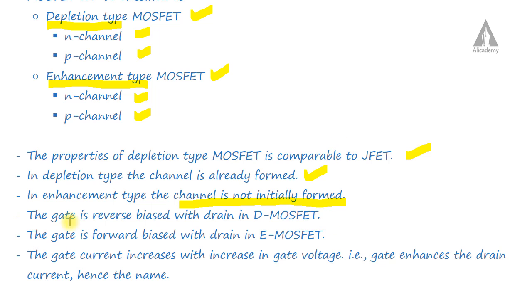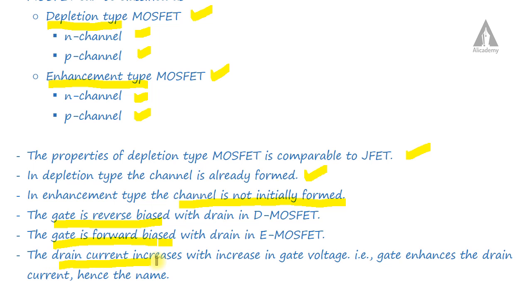In the depletion type MOSFET, the gate is reverse biased, but in the enhancement type MOSFET, the gate is forward biased. In the enhancement type, the drain current increases with an increase in gate voltage — that is, the gate enhances the drain current, hence the name enhancement type MOSFET.